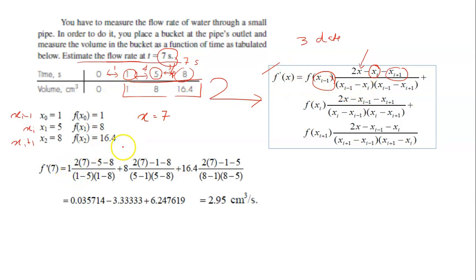And then 2x, 2 times 7 minus 5, because this one is minus xi, which is 5, and so on. So you just follow this step, and you do your calculation, and you will get this flow rate for your answer.